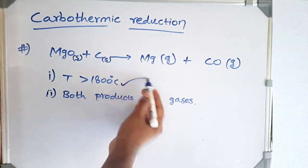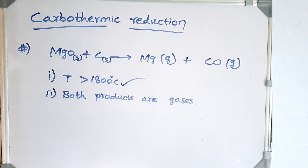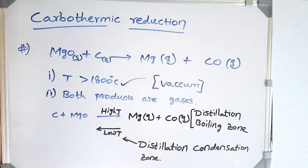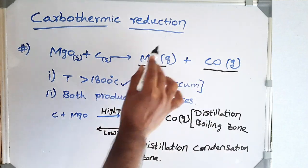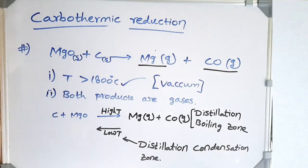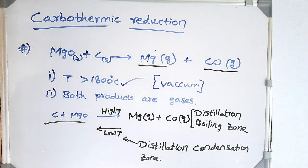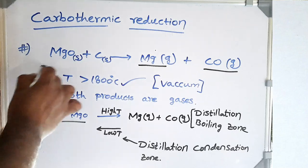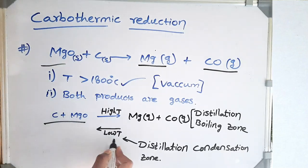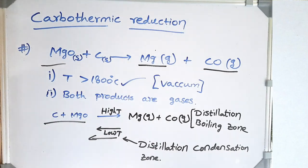The first problem with carbon reduction is it requires very high temperature, though we can bring the temperature down by applying vacuum. But the main problem is that both products — magnesium and carbon monoxide — are gaseous in nature, so it is very difficult to separate them. The only method is distillation, but since this is an endothermic reaction, the reverse is exothermic. The moment we reduce the temperature to separate these two, the backward reaction occurs, and it is very difficult to stop it.